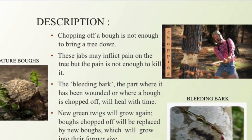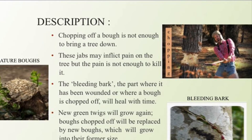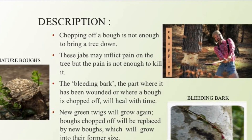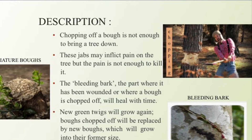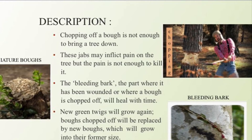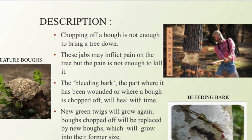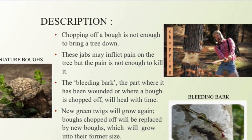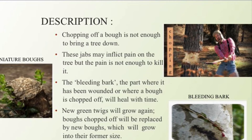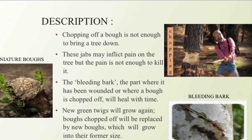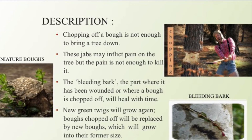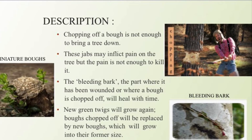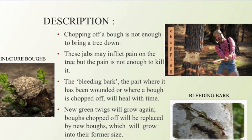In the second stanza, the poet tells us that chopping off a bough is not enough to bring a tree down. These jabs may inflict pain on the tree, but the pain is not enough to kill it. The bleeding bark — where it has been wounded or where a bough is chopped off — will heal in time. New green twigs will grow again, and the boughs chopped off will be replaced by new boughs which will grow into their former size.